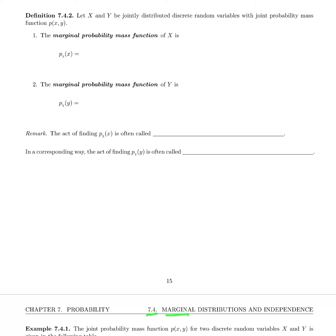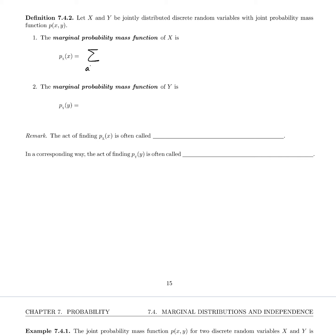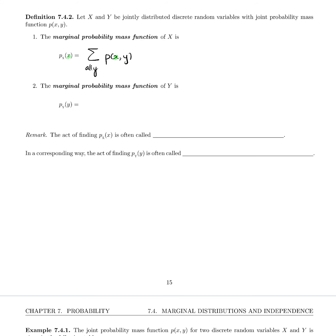Welcome back to section 7.4 on marginal distributions and independence. Definition 7.4.2 says: let x and y be jointly distributed discrete random variables with joint probability mass function p of xy. The marginal probability mass function of x is p sub x of x, and it is the sum over all y values of p of xy. The marginal probability mass function of y is p sub y of y — the corresponding definition — where you sum over all x values of p of xy.